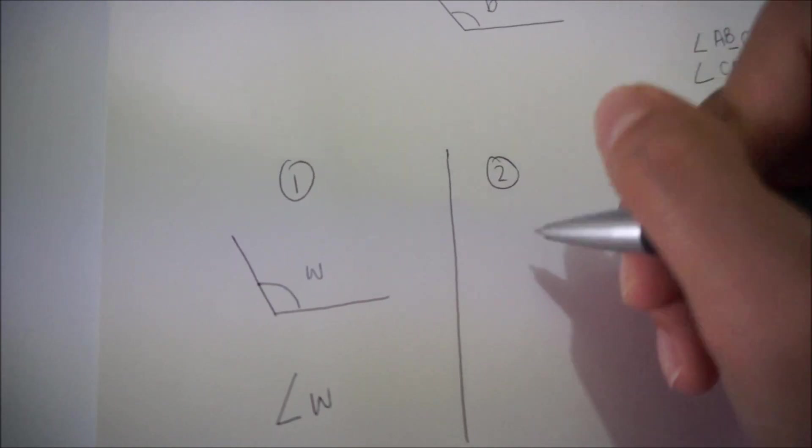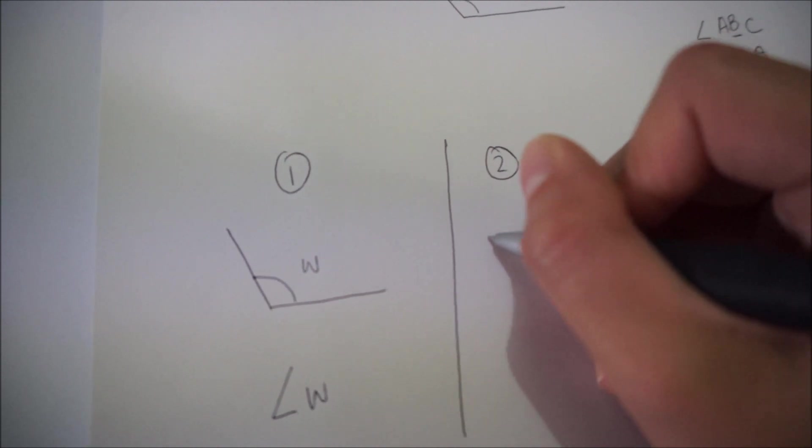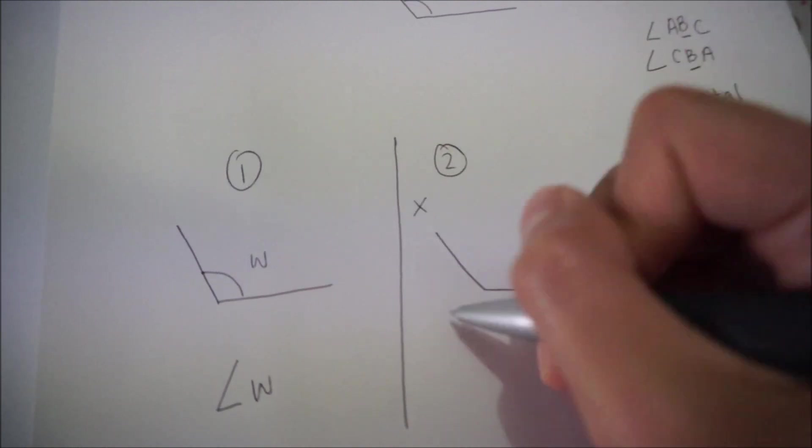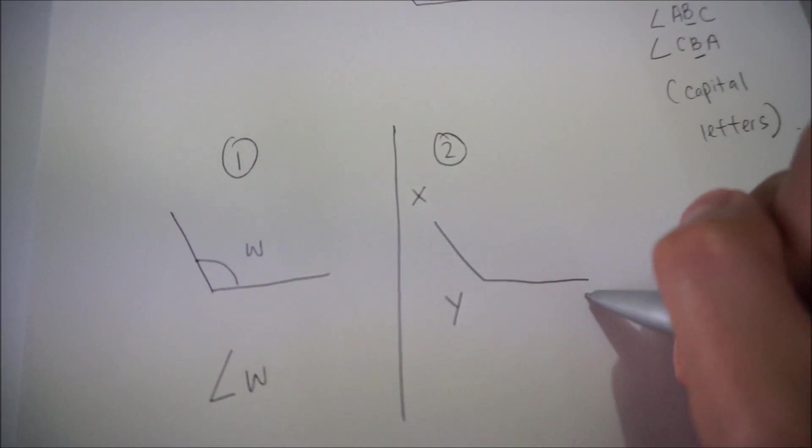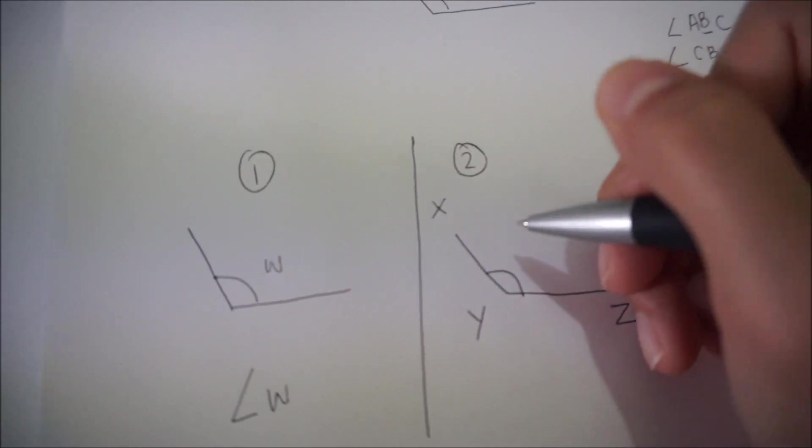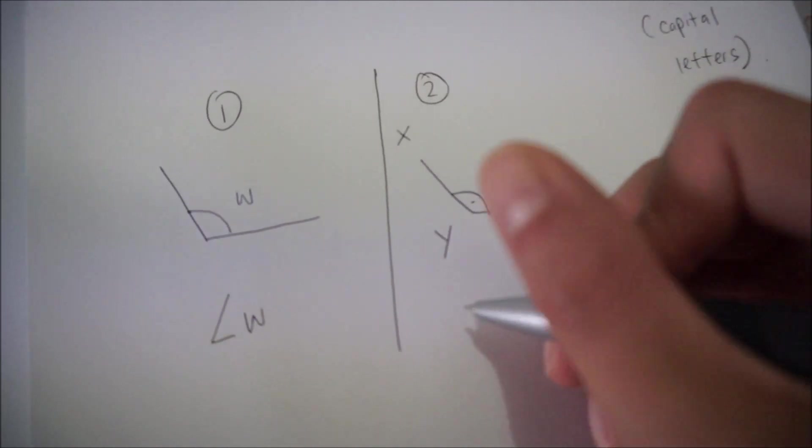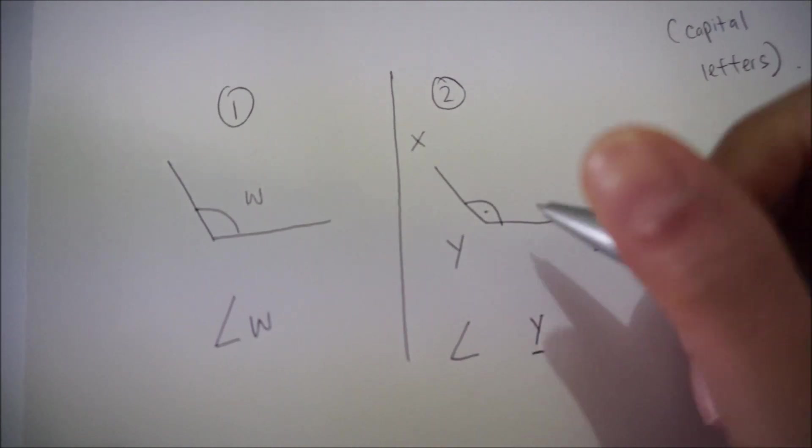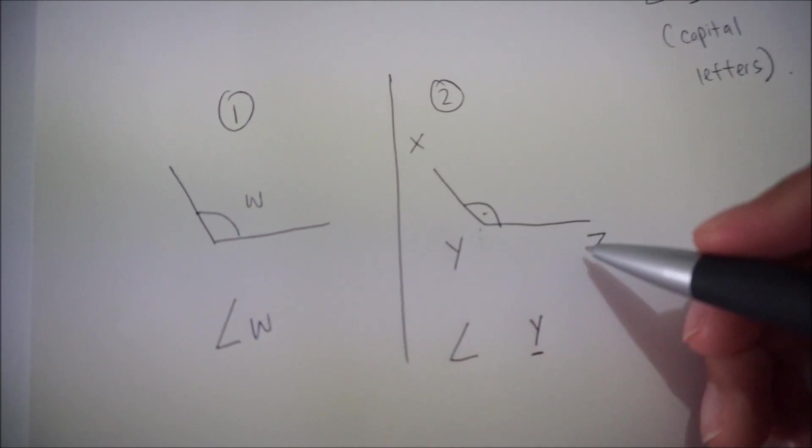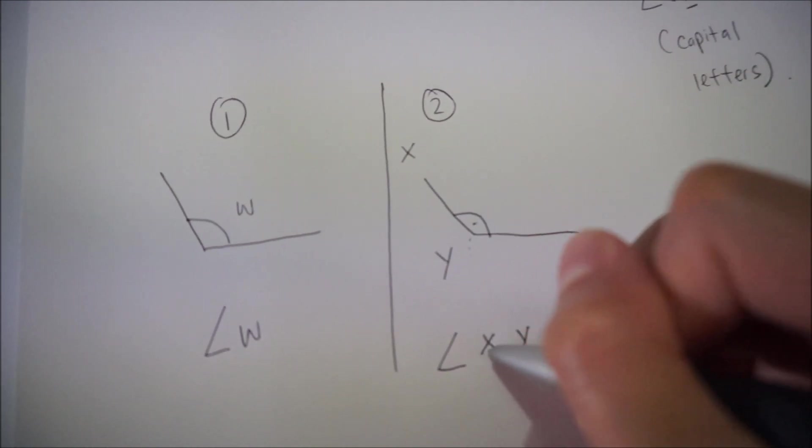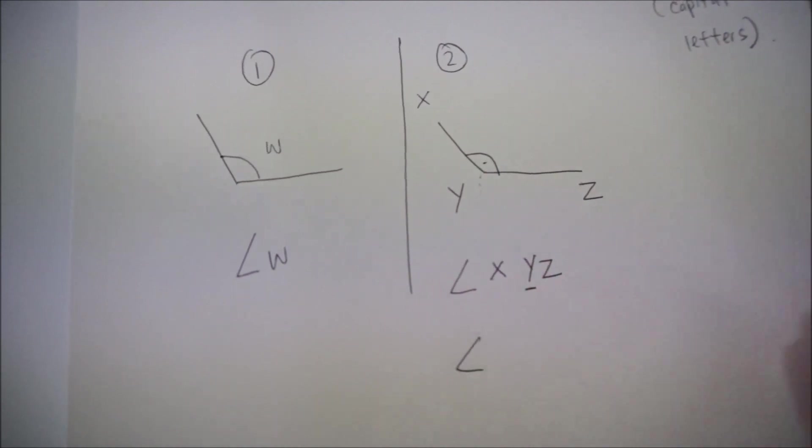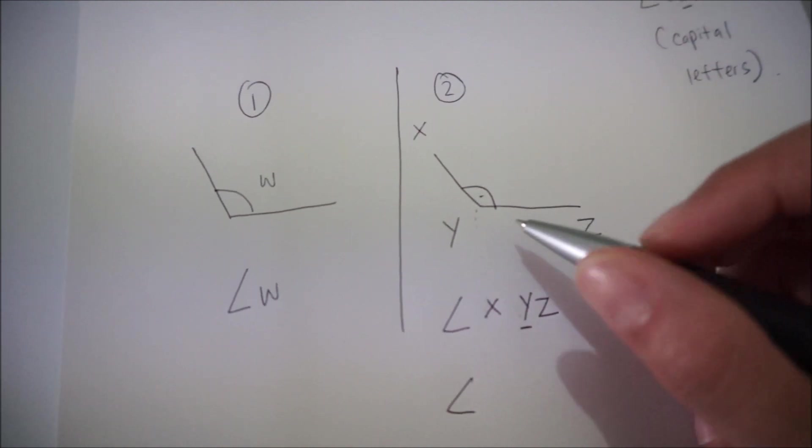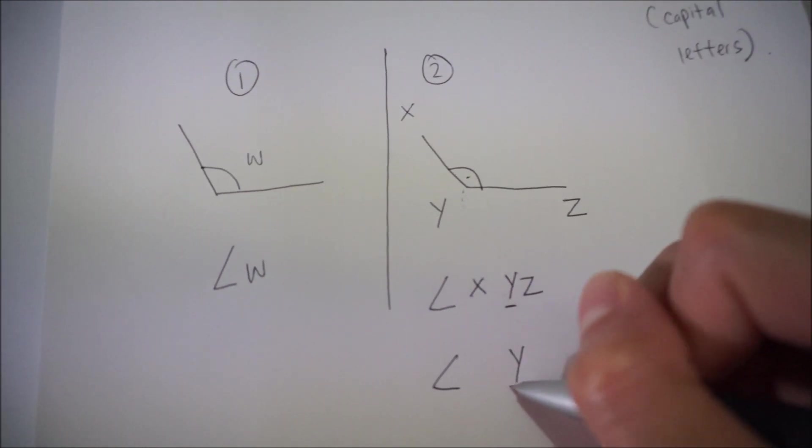The second way is when you name the lines. For example, I have two straight lines. I'm going to call this, let's say, x, y, z. My angle is here. And this angle is called angle... remember, y must be in the center. What's beside it? X and z. Y must be in the center because y is where the angle is. What's another way of calling this?